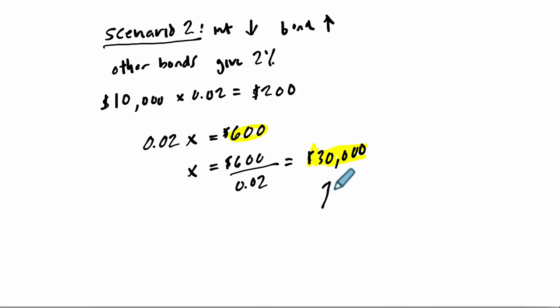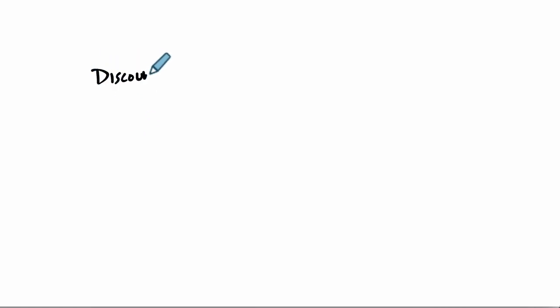In general, there are phrases we use to describe this process. In scenario two, this is called buying at a premium — you're selling it for more than you paid for it. There are essentially two situations: discounts, where you buy or sell a bond for cheaper than you originally paid, and that happens when interest rates are going up.